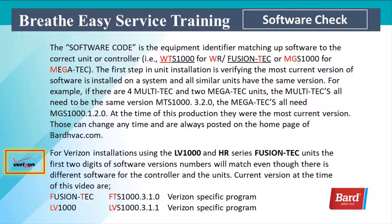At the time of this production, these were the most current versions listed on our website and available for download. Those can change at any time and are always posted on the home page of bardhvac.com. In the lower right corner it says 'Software Download' — click there and you can check for the most current version. For Verizon installations using the LV 1000 and HR series Fusion Techs, the first two digits of the software version numbers will match.